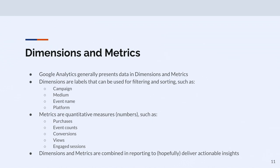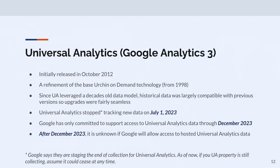When you look at data in Google Analytics, it's helpful to think about two big words: dimensions and metrics. Dimensions are labels that can be used for filtering and sorting — it could be campaign, medium, source medium, event name, or platform. Metrics are quantitative measurements — numbers — like purchases, event counts, conversions, views, engaged sessions. Dimensions and metrics are combined in reporting to, hopefully, deliver actual insights. That's been basically true the entire way through with Google Analytics.